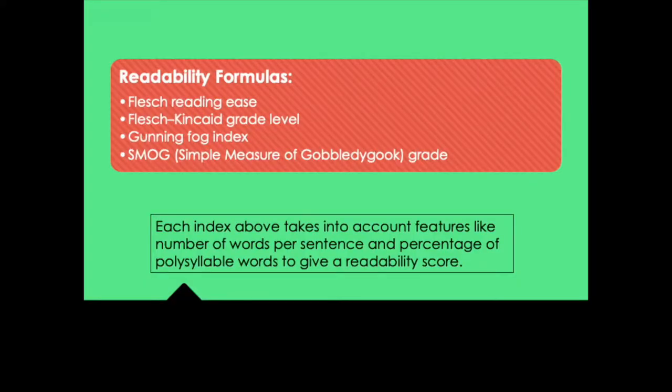How do you evaluate readability? Or how do you measure readability? There are some actual formulas that can be used to measure readability. These include the Flesch Reading Ease, the Flesch Kincaid Grade Level, the Gunning Fog Index, and the Smog Grade, which stands for Simple Measure of Gobbledygook. And each of them takes into account features such as the number of words per sentence, in other words, sentence length, and features like the percentage of polysyllable words. And it factors these features to give a readability score. You can go online and search for readability test tool or readability calculator and find websites where you can paste in your text and it will give you a readability score.